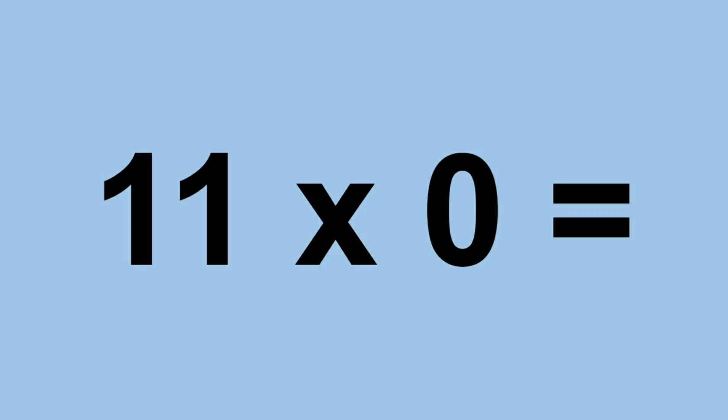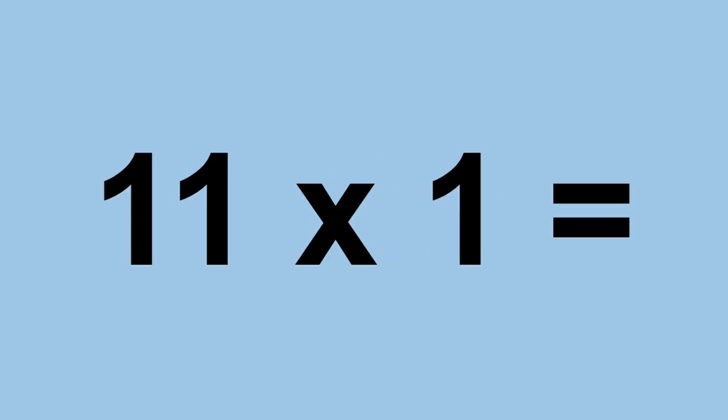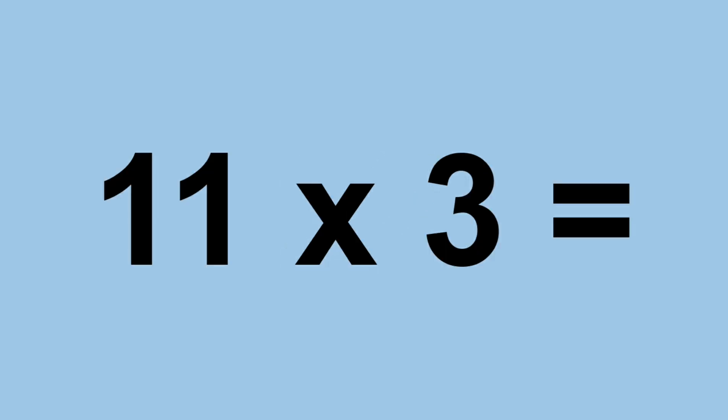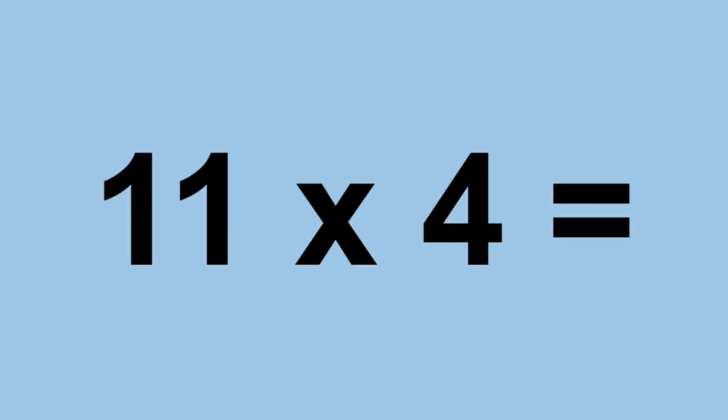Eleven times zero equals zero. Eleven times one equals eleven. Eleven times two equals twenty-two. Eleven times three equals thirty-three. Eleven times four equals forty-four.